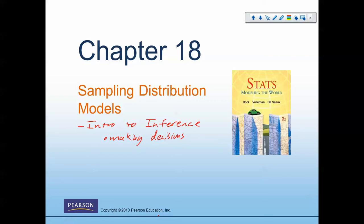Critical to that understanding are things called sampling distribution models — they are the foundation for which all inference works. It's very important that you understand the concepts of this chapter, not necessarily the problems we do, but how the models work and how they apply to confidence intervals and hypothesis tests. It is essential to understanding those.